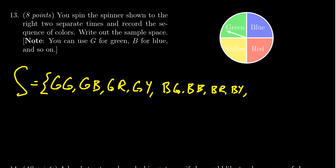You could also spin it and get red first. So you could get red-green, red-blue, red-red, red-yellow.